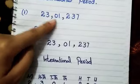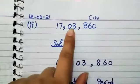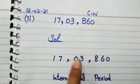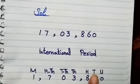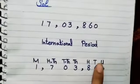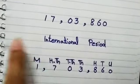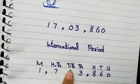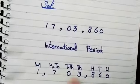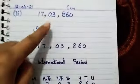Pakistani period was given and we had to change it to international period. Question number 2: 1703 — also given in Pakistani period and we will change it to international periods. Unit period, thousand periods, and millions periods: unit, ten, hundred, thousand, ten thousand, hundred thousand, and millions. In Pakistani periods, thousand and ten thousand would be lakh and ten lakh. We make groups of 3 in international periods.